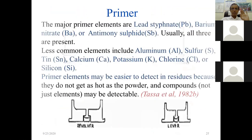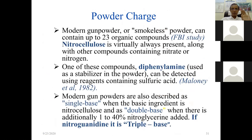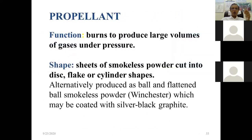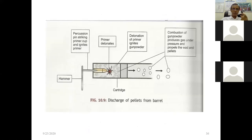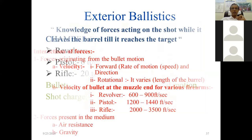In detail we covered: what is the primer, what is gunpowder, the difference between single base, double base, and triple base powder, and what is black powder — consisting of potassium nitrate, charcoal, and sulfur. When you pull the trigger, the hammer goes forward, touches the percussion cap, the primer detonates, the gunpowder detonates, producing gas pressure, and the projectile — pellets in a shotgun or bullet in a rifle — exits the weapon. Now we will concentrate on exterior ballistics: the forces acting on the shot while it leaves the barrel until it reaches the target.